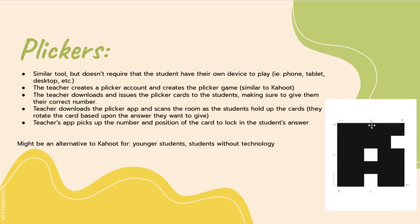It gives you the same graph with how people answered, and the same data as Kahoot — because all Plickers is concerned with is that Jane number two answered B. This is a great alternative to Kahoot for younger students who don't know how to use devices yet, or for classrooms that don't have the technology available.